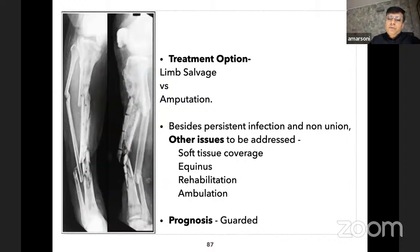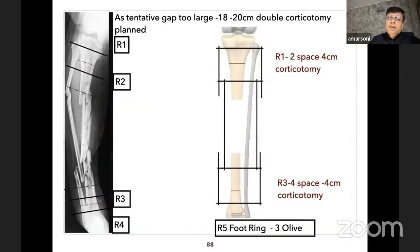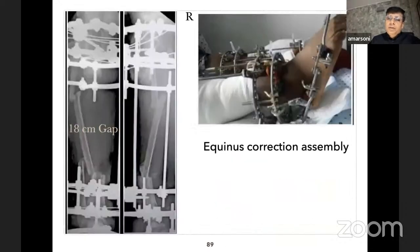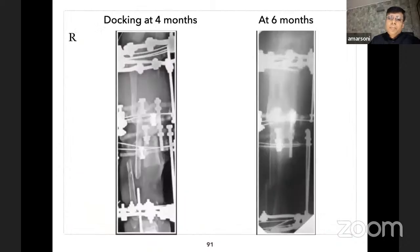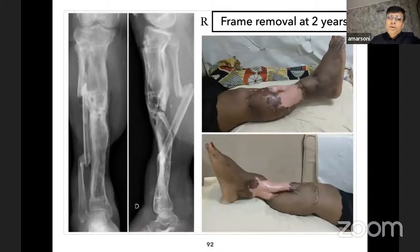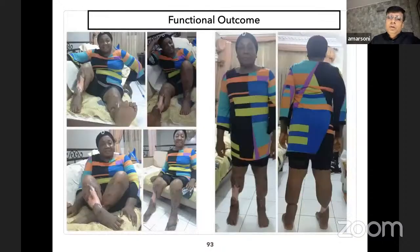Another patient from Cameroon with bilateral infected non-union with equinus. Detailed counseling was done for limb salvage versus amputation; the patient opted for limb salvage. Converging trifocal osteosynthesis was planned with proximal and distal corticotomy and equinus correction. The bone gap was 18 centimeters. Metaphyseal corticotomy was done; docking was done at four months, then the patient was discharged and treated at home with contact via social media. Frame was removed at two years with good functional outcome.